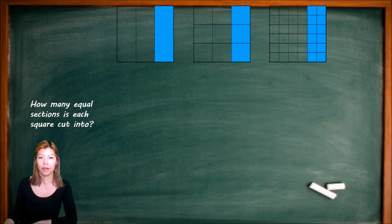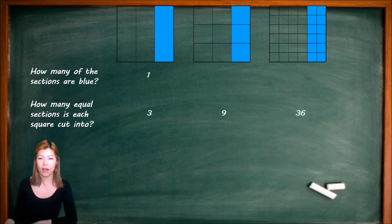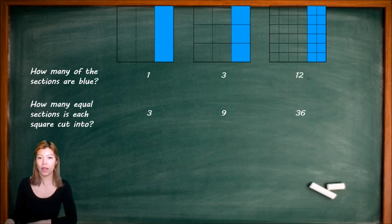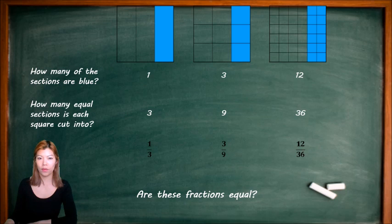Let's look at a third. How many pieces did I cut each of these pictures by? The first one by three, the next one by nine, and I'll save you from counting — I cut the last one into 36 little boxes. I've coloured the top picture one piece, three pieces of the second image, and 12 pieces of the third image. They all look the same. Fraction-wise, it's a third, three over nine, and 12 over 36. Are they equivalent? Yes. Looking at the pictures, we can see that they are equivalent fractions.